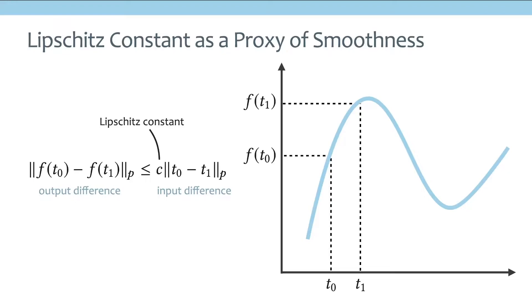And the key idea behind our method is to basically use this Lipschitz constant as a proxy of function smoothness. Because if you look at this equation intuitively, it basically means that this c controls the maximum magnitude of the slope. And we use this as an approximation for the smoothness.